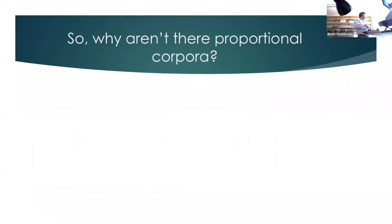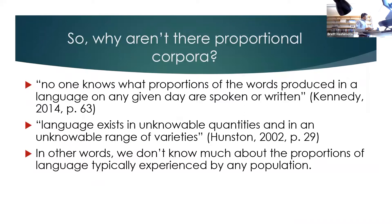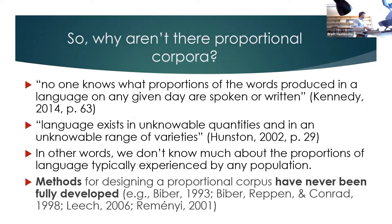The reason is that we haven't known the proportions, and so we can't design the corpus to be proportional. As Kennedy and Hunston have pointed out, it's very difficult to know what proportion of language in any given day is spoken or written. So we need to develop methods for designing a proportional corpus, because while this type of corpus has been discussed and some methods hypothetically proposed, they haven't actually been refined and put into practice.